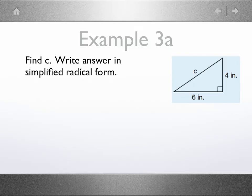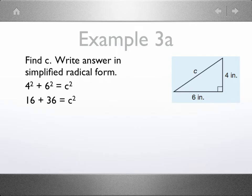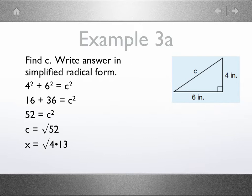Now in this example, we are asked to find c. We start off by applying the Pythagorean theorem and squaring those numbers. 52 equals c squared. Now when we take the square root of 52, we think, are there any perfect square factors of 52? Yes. 4 times 13 is 52. So therefore, the square root of 4 is 2, and what's left inside the radical is the square root of 13.